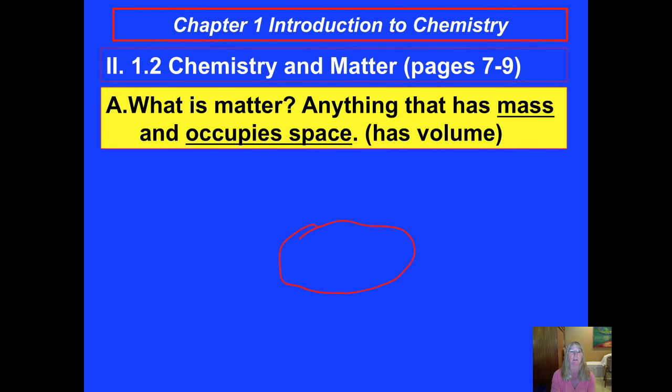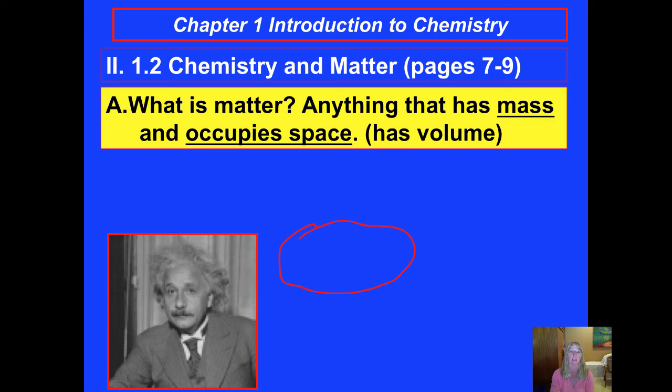So let's do some definitions. We need a definition of what is matter. It's a little bit of a circular definition. If you look at your PowerPoint, and also on the screen, you can now see that we've covered concepts up to section 1.2, and it is on pages 7 through 9 of chapter 1 in your textbook. So what is matter? Anything that has mass and occupies space. Another way of saying occupies space, or takes up space, is that it has volume.